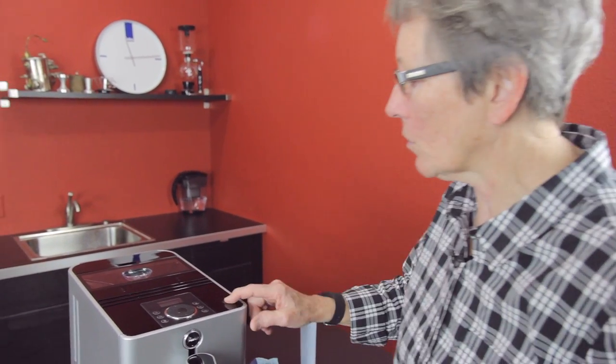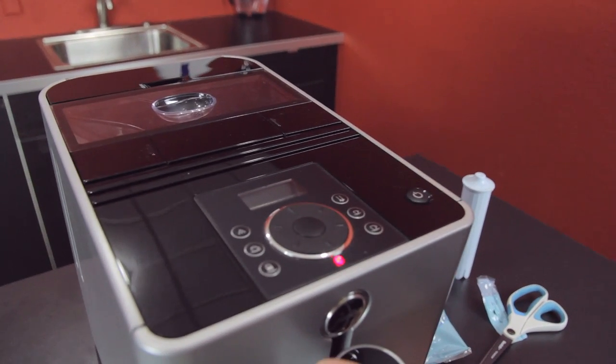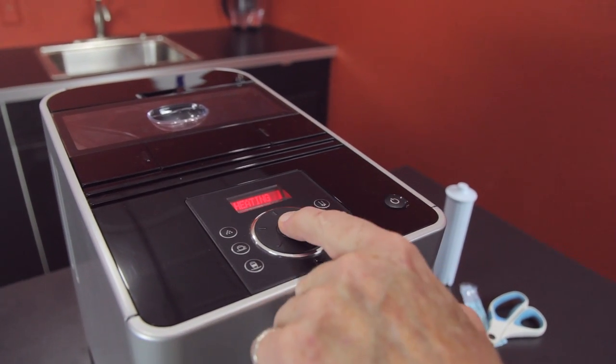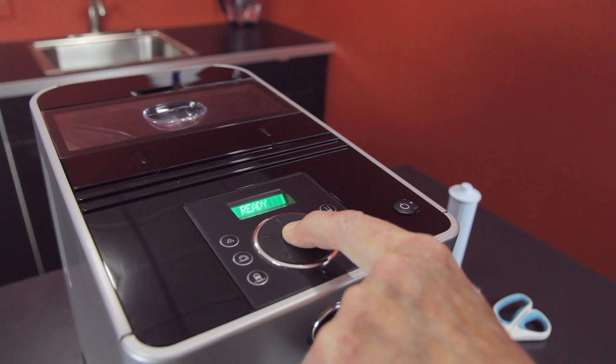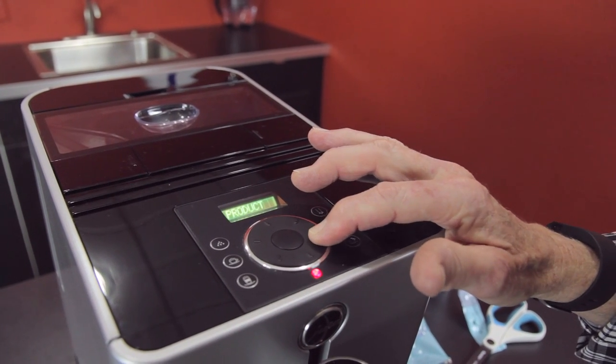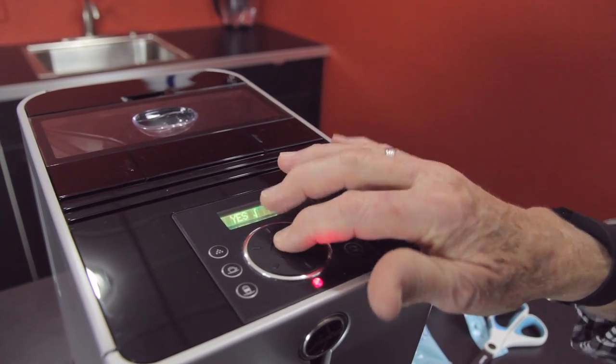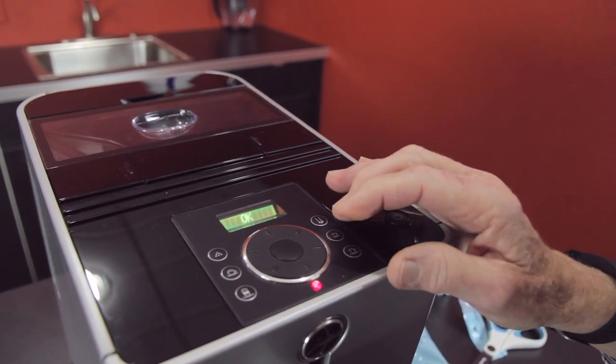So what you do is turn the machine on and then we're going to get into the program mode. We don't care if it heats or not. Rinse. Now we're going to take it over to filter. No. We're going to change it to yes. Press OK.